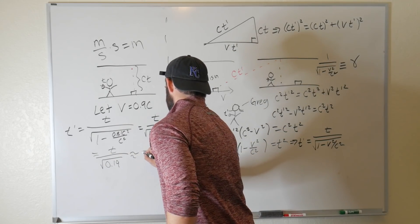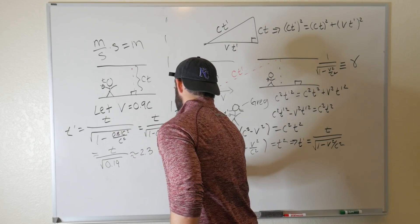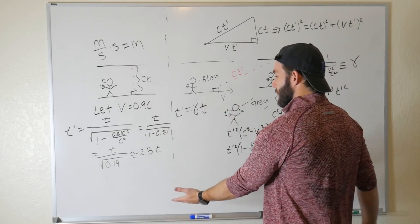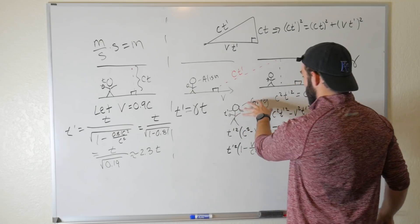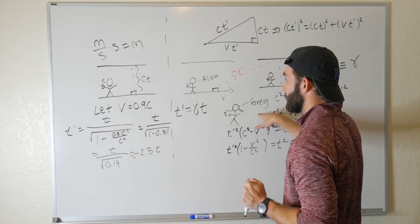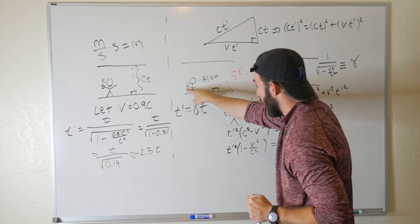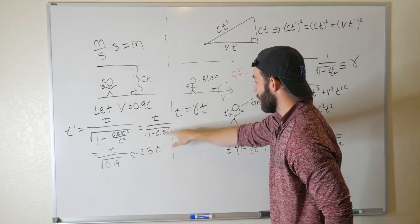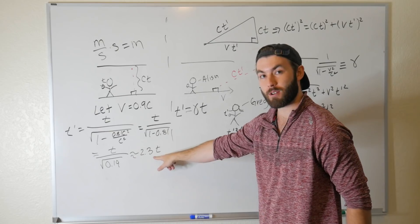which is about 2.3T. And what this tells you is that what time dilation actually means in this respect is that Greg would observe Allison's watch to be ticking 2.3 times slower than hers.